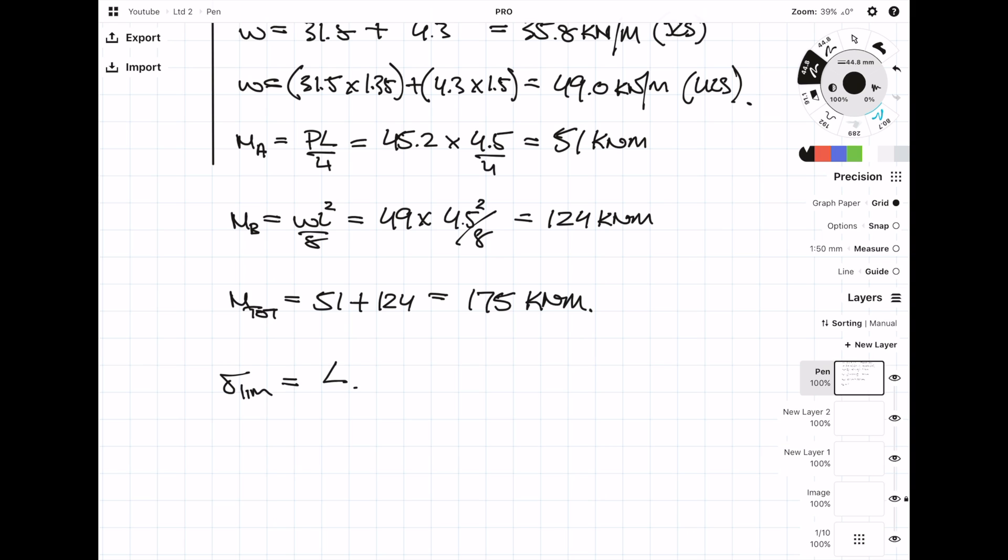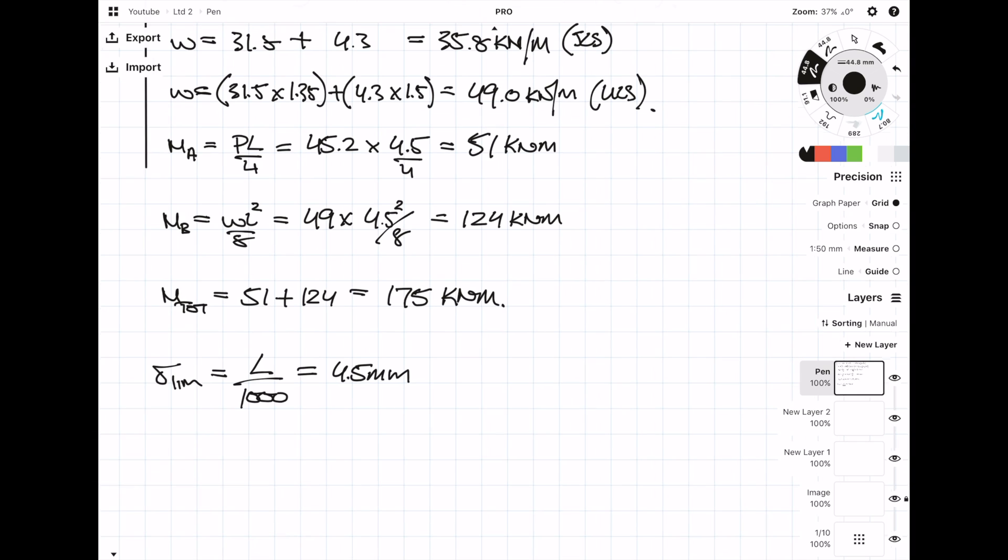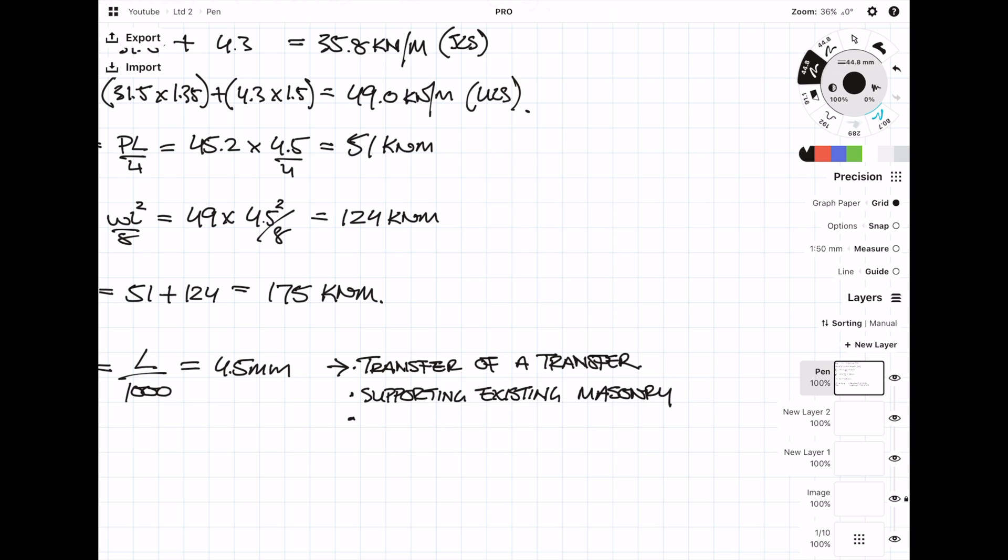As a first guess, I'm going to try a deflection limit of span over 1000. Now this is a really tight limit, so I may be looking to reduce this later on. Because it's transferring a transfer, and because it's supporting a floor and also supporting an existing masonry wall, that is the reason why I'm going so hard on the deflection limit. If I can get a sensible beam size to work even with such a harsh limit, then that's absolutely fine. But if I find that the beam size gets too ridiculous, then I can look to relax this limit.